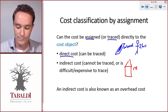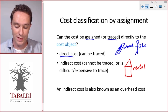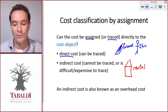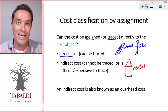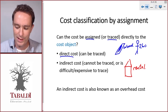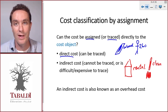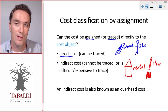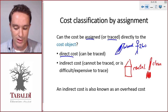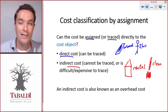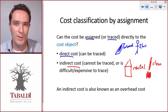Some costs are impossible to trace directly to the cost object. For the rental of our shed, we don't know exactly how much of the rental should be allocated to each specific table. Similarly, the cleaning company — we pay them a monthly fee to clean the shed, but we don't know exactly how much of that cleaning cost should be attributed to each table. So those are indirect costs.